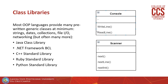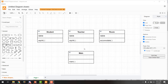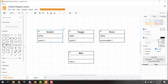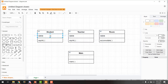Most OOP languages provide many pre-written generic classes. At minimum, we have classes for strings, dates, collections, file input and output, networking, and many more. In C Sharp, you get the console class, which is equivalent to the scanner class in Java. Here we have a class diagram with four classes: the main class, student class, teacher class, and room class. These three classes share the same attribute — name. Student and teacher can say hi, and room can accommodate.